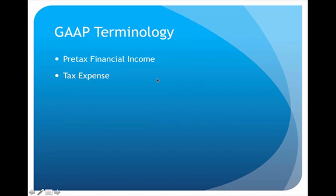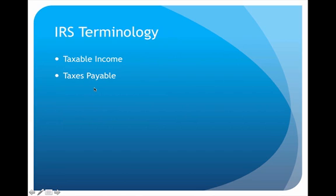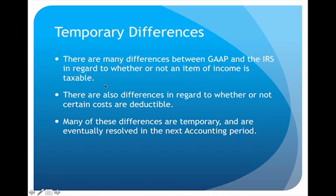In terms of GAAP terminology, we have something called pre-tax financial income — that's the amount of income our taxes are going to be based on — and then we have tax expense, which is the amount of taxes that, according to accounting, should be paid. In IRS terminology it's a little different: the IRS uses taxable income for the income that's taxable, and taxes payable to refer to the amount of tax that's actually sent.